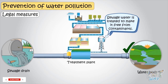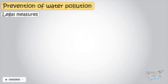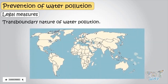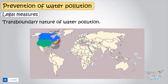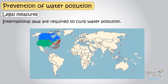Water pollution has a transboundary nature — that is, waste discharged by one country may affect other countries as well. Since large water bodies like seas and oceans are shared and don't belong to any particular country, laws are required to be made at the international or continental level.